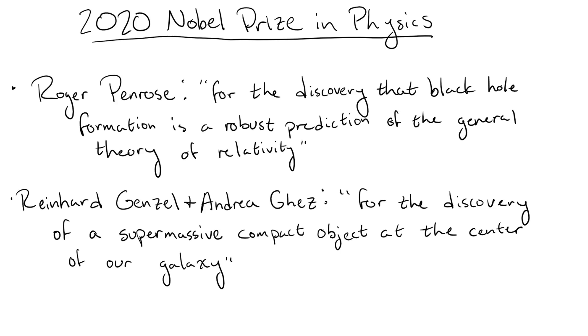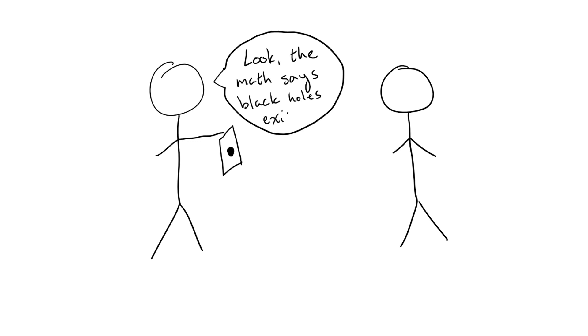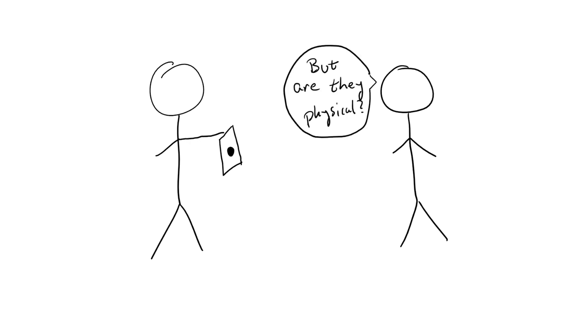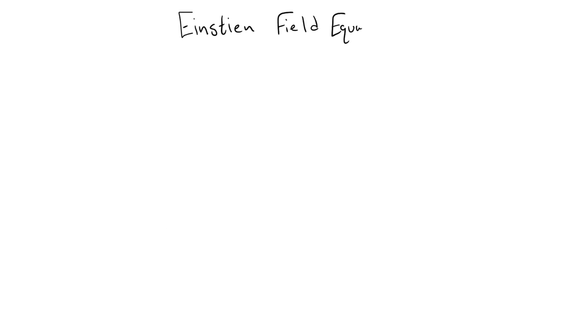Let's first talk about Penrose's contribution. Black holes had been known to show up in general relativity long before Penrose came up with his theory of trapped surfaces. However, they always came with some doubt that they could actually be physical objects. See, the nature of Einstein's equations of general relativity make them incredibly difficult to solve for all but the simplest cases.